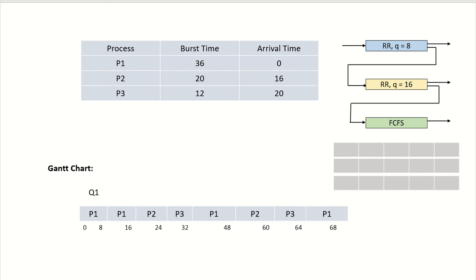Here is an example with three processes P1, P2, and P3. Their arrival times are 0, 16, and 20, and their burst times are 36, 20, and 12 time units respectively.